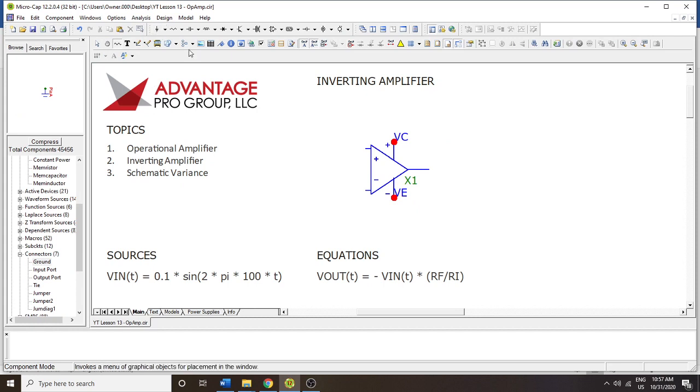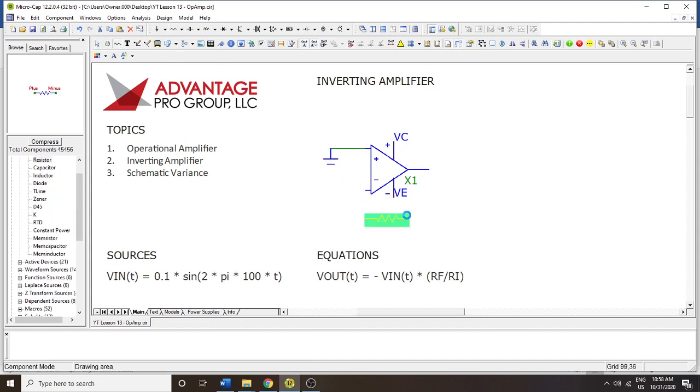And then for the inverting amplifier, you're going to place the non-inverting terminal to ground potential. And then you're going to be adding the feedback resistances and the source input to the inverting terminal.